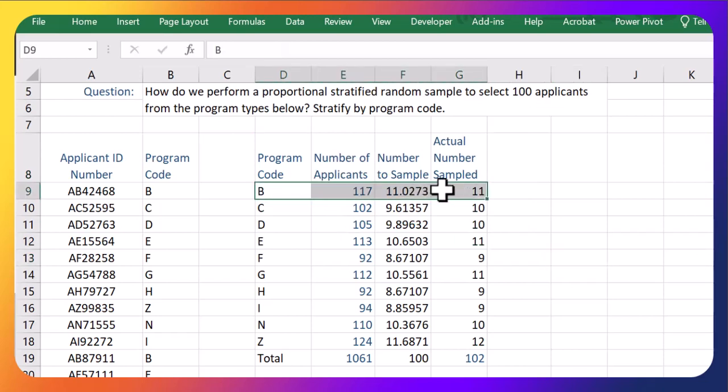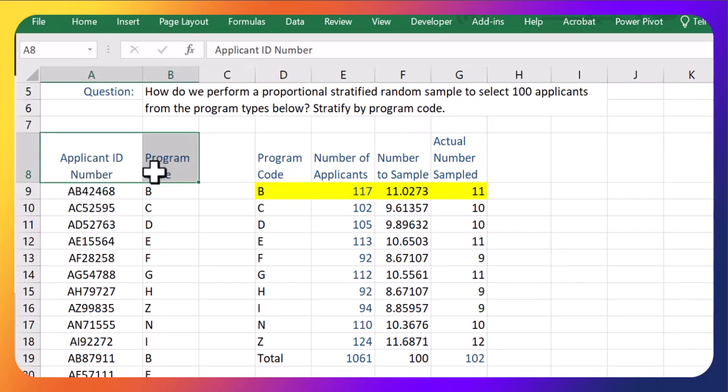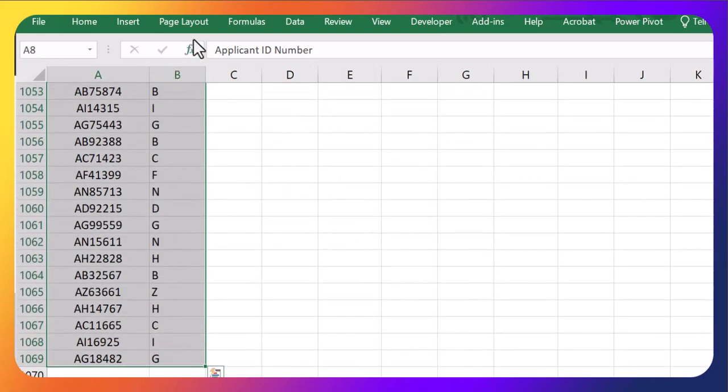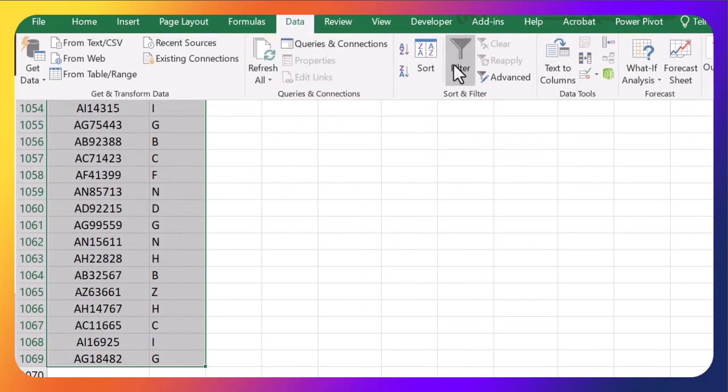Let's just take a look at program code B. And let's do the simple random sample on that group. We're going to grab 11 of those guys. Let's have a look at how we would grab all of the program code B people and then sample 11 of them. So we do that here by highlighting, Control-Shift-Down, highlighting everyone and under Data and Filter.